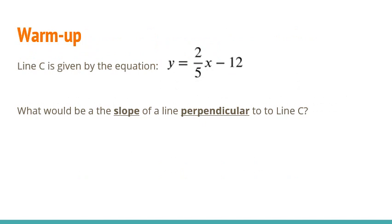So line C is given by the equation y equals 2 fifths x minus 12. What would be the slope of a line that's perpendicular to line C? The first thing we have to do is identify the slope of line C. It's already in y equals mx plus b format, so we can see that the slope of line C is 2 fifths.